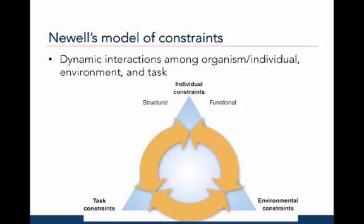To understand why a particular movement is exhibited, we need to consider the characteristics of the individual moving, his or her surroundings or environment, and the purpose or goal of the movement task. Consider the following example: a baby taking his or her first steps, a child walking on sand, and an older adult walking on an icy sidewalk. The goal or task constraint is always the same — to walk from one place to another — but the individual and environmental constraints vary and result in very different walking patterns.